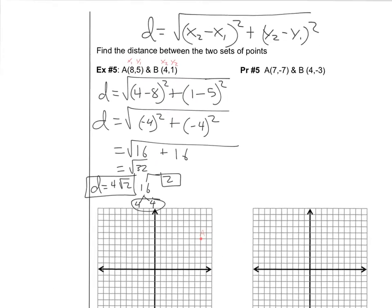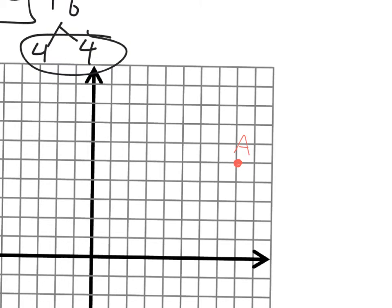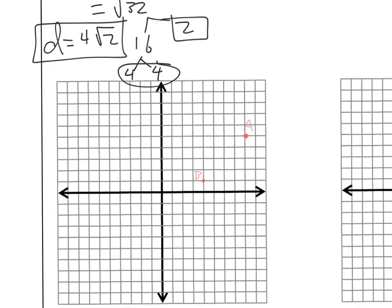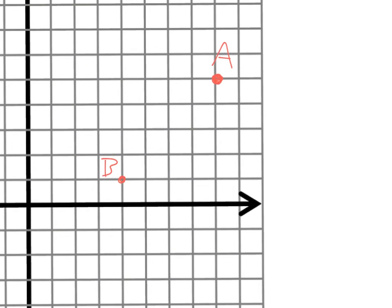Okay, and B is 4, 1, so let's plot B now. Okay, well, just like we came up with the distance formula, let's just sketch a little right triangle real quick.